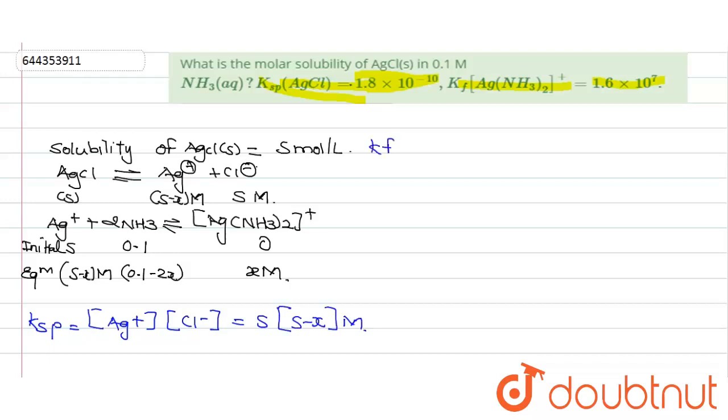And Kf is equals to [Ag(NH3)2+] divided by [Ag+] times [NH3]^2.